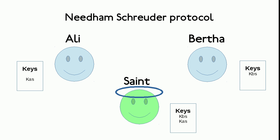Meet Ali, Bertha and The Saint. Ali wants to exchange confidential data with Bertha. Ali wants to use symmetric encryption to encrypt the messages he will send to Bertha. Symmetric encryption is very secure and fast. If he and Bertha only share the key, then Bertha could decrypt his messages.